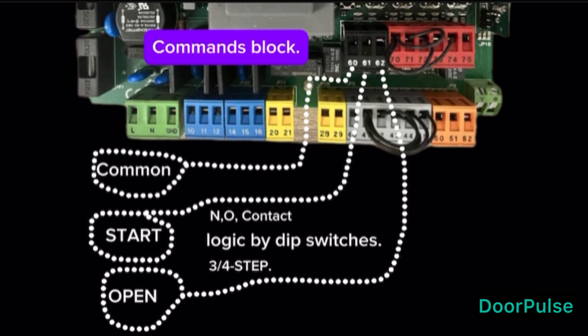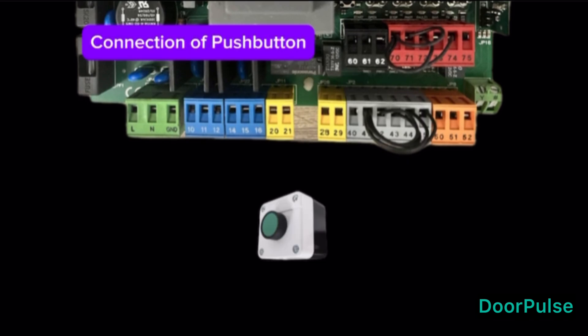Terminal 62, open command button. It's NO contact. Gate opened with this command. If the input stays closed, the leaves stay open until the contact is opened. When the contact is open, the input stays closed.